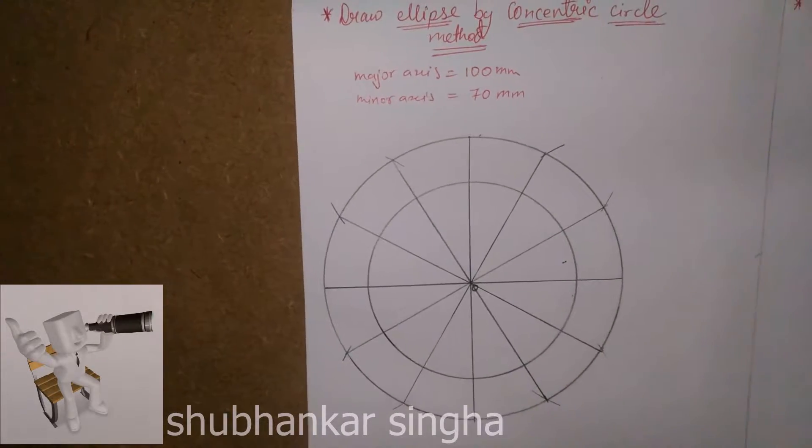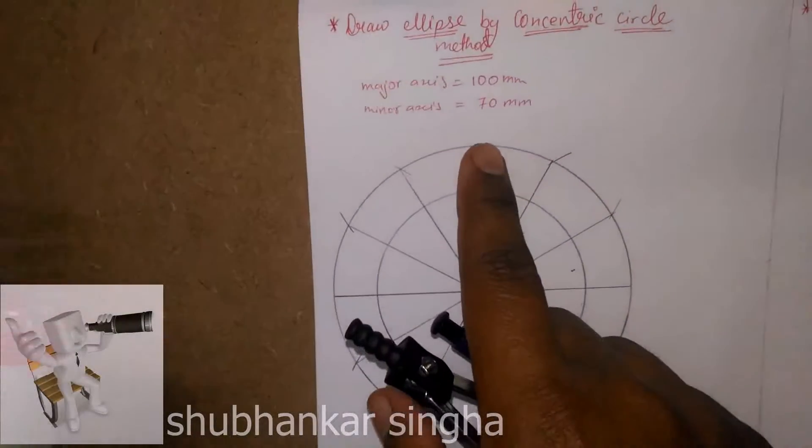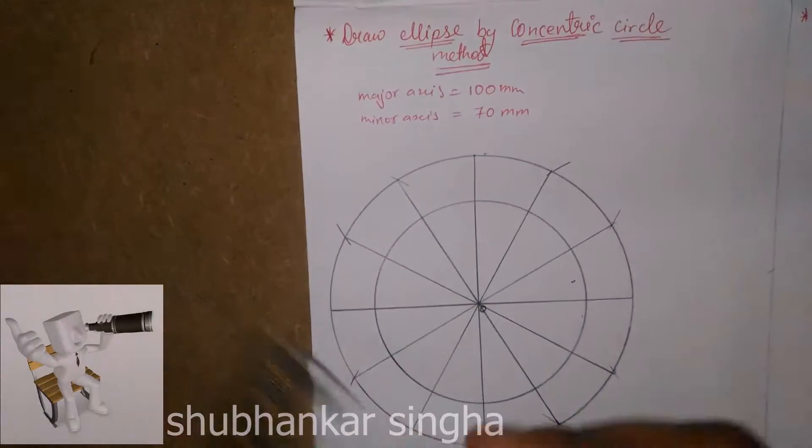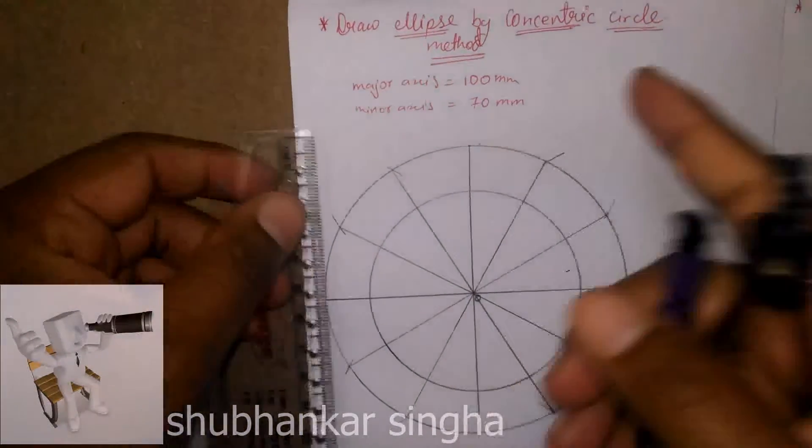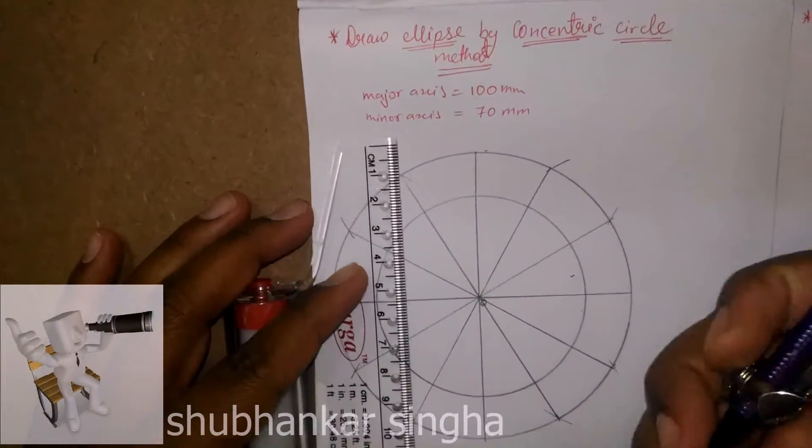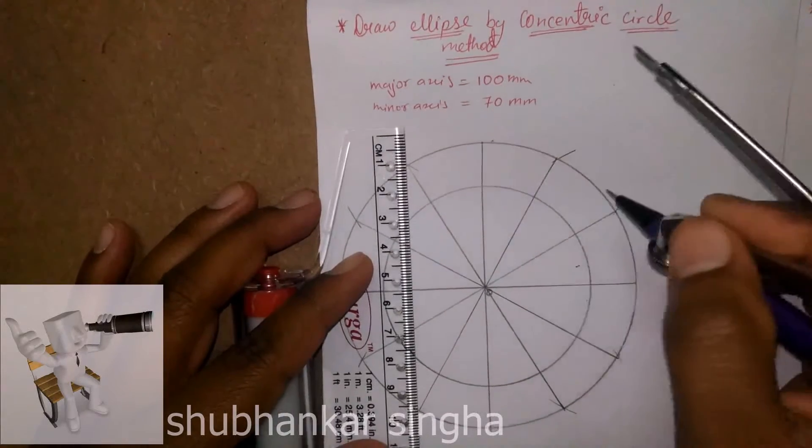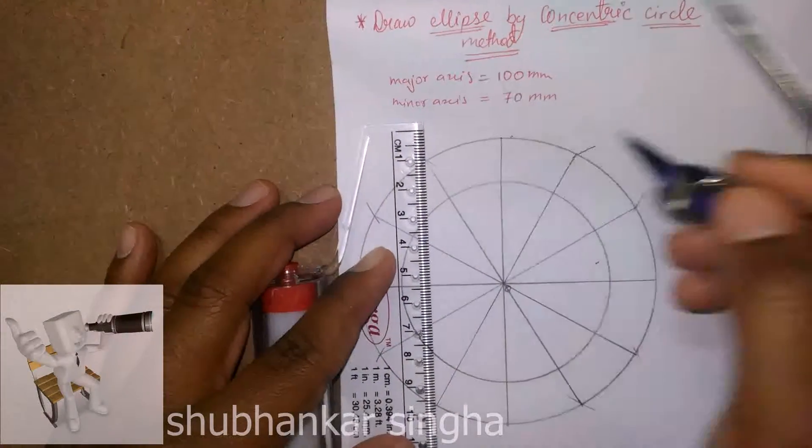Now we have to do that from the big circle, that is of 100mm diameter. Draw perpendicular lines like this.